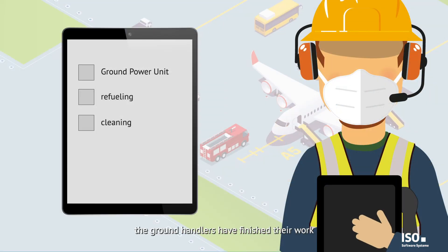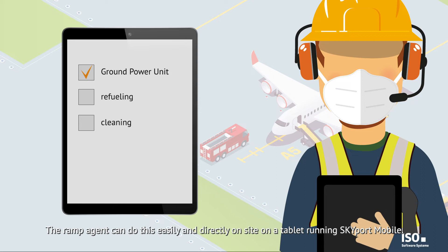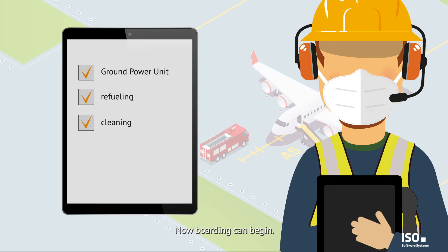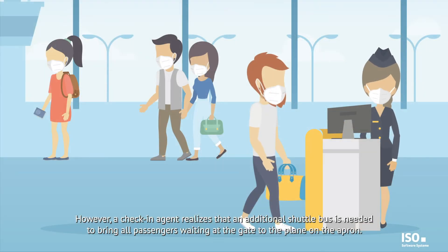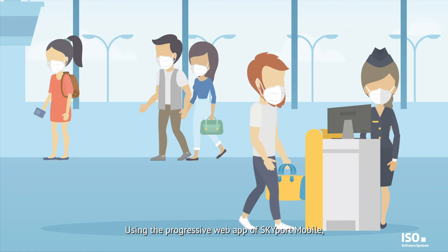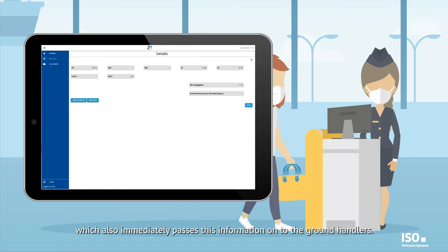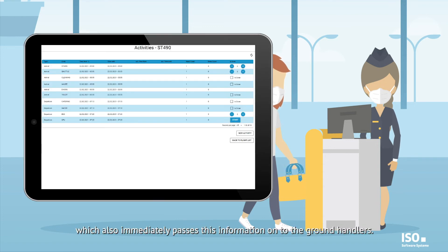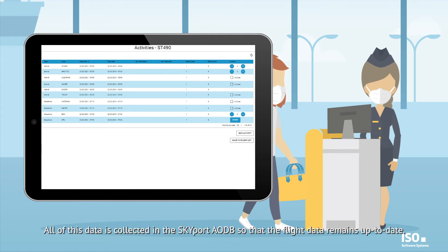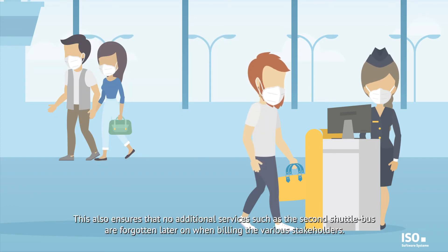In the meantime, the ground handlers have finished their work and have reported this to the Skyport AODB. The ramp agent can do this easily and directly on site on a tablet running Skyport Mobile. Now boarding can begin. However, a check-in agent realizes that an additional shuttle bus is needed to bring all passengers waiting at the gate to the plane on the apron. Using the progressive web app of Skyport Mobile, the agent reports this directly to the Skyport AODB, which also immediately passes this information onto the ground handlers. All of this data is collected in the Skyport AODB so that the flight data remains up to date. This also ensures that no additional services such as the second shuttle bus are forgotten later on when billing the various stakeholders.